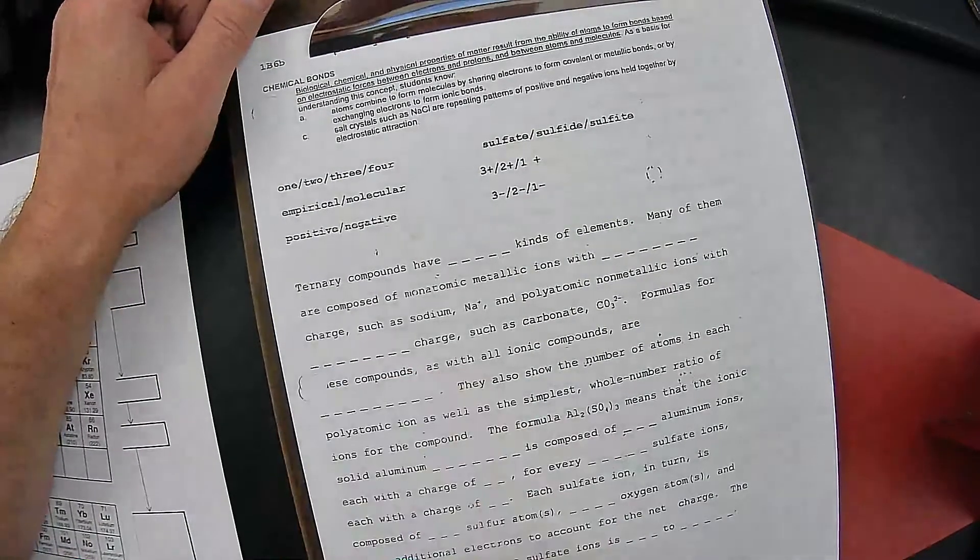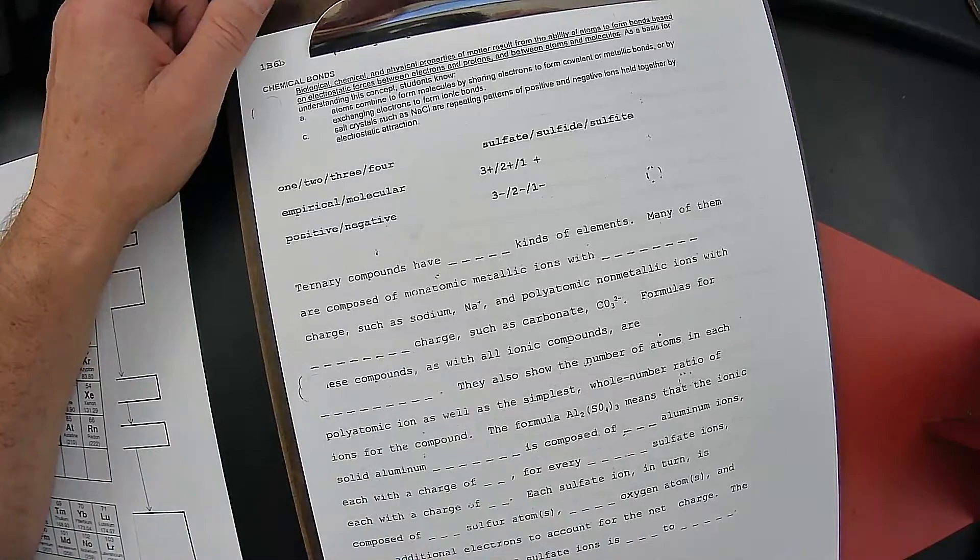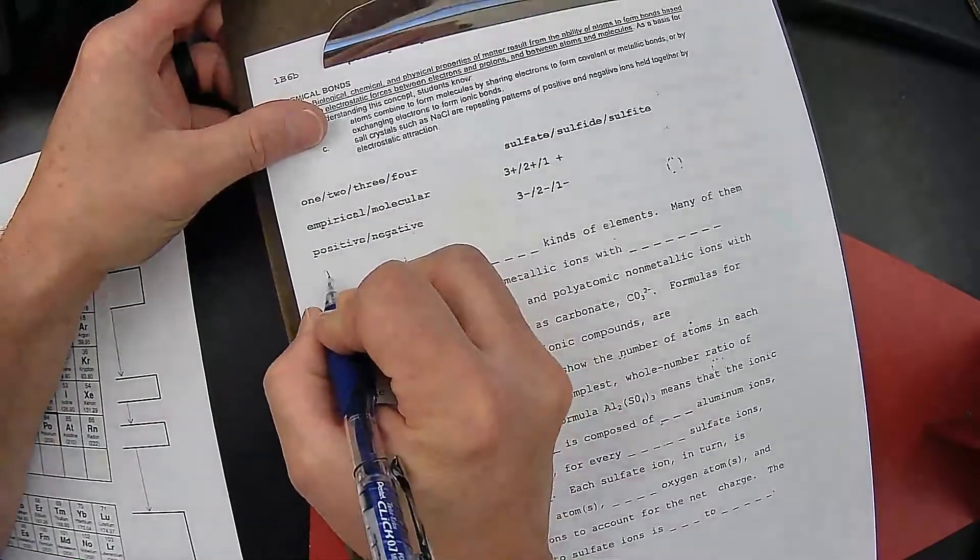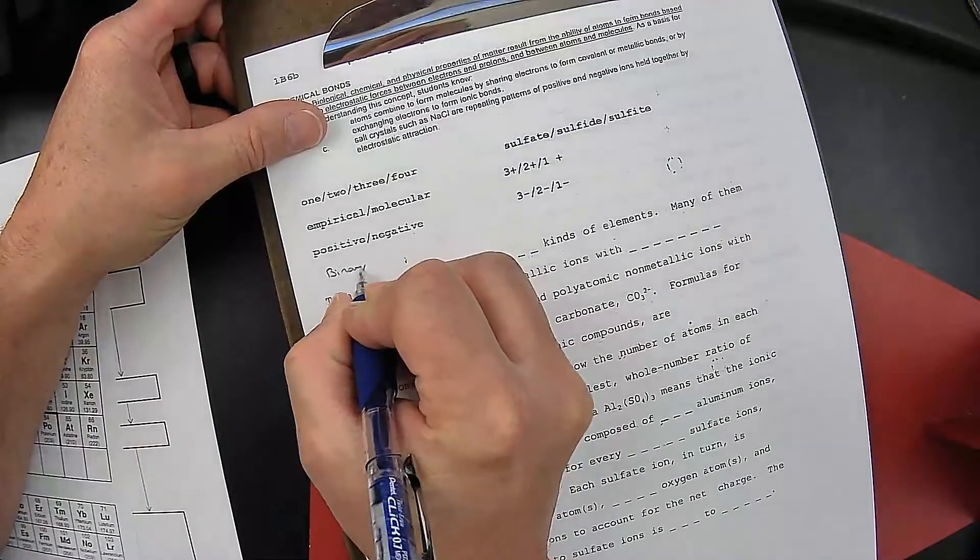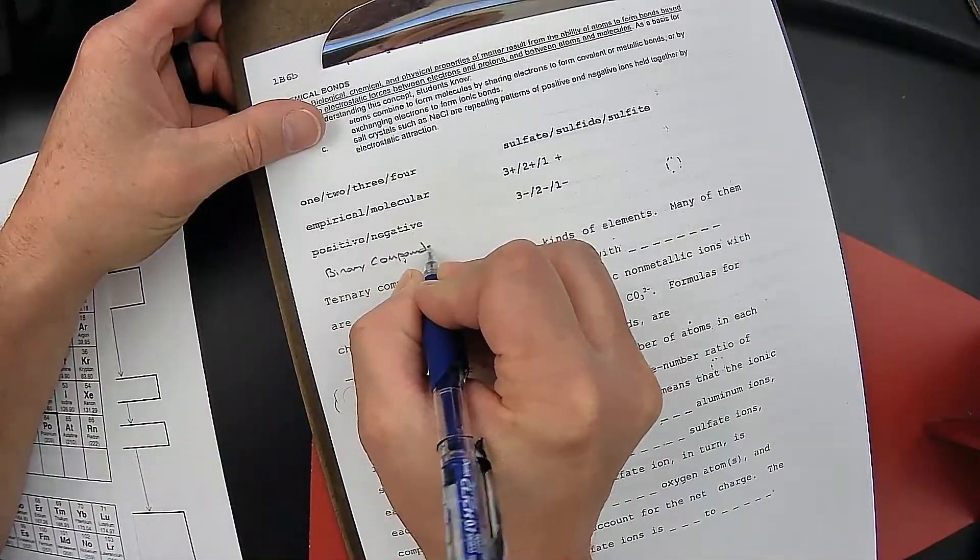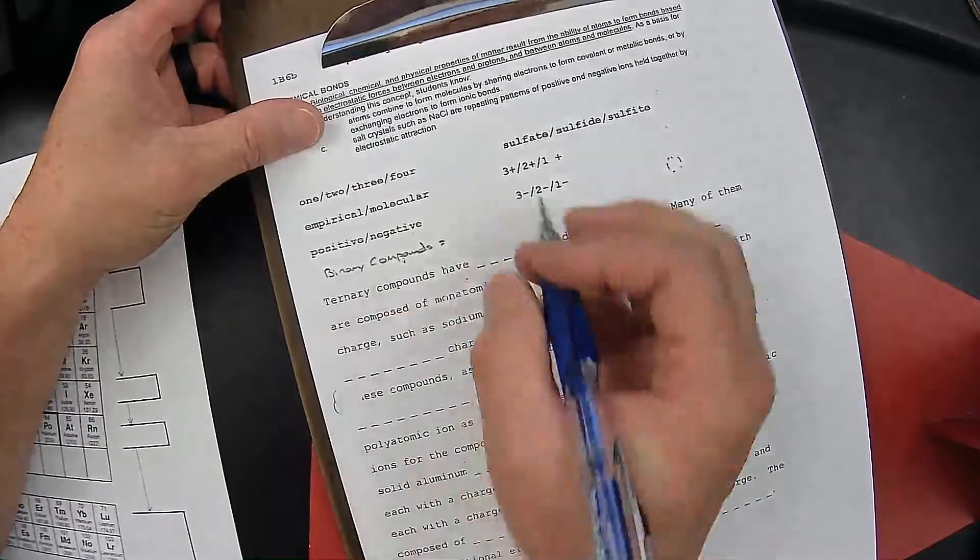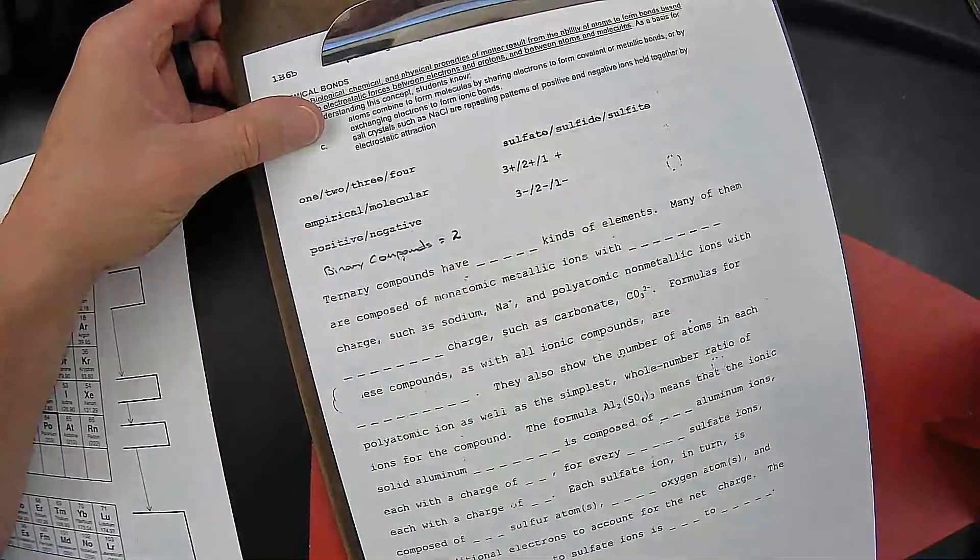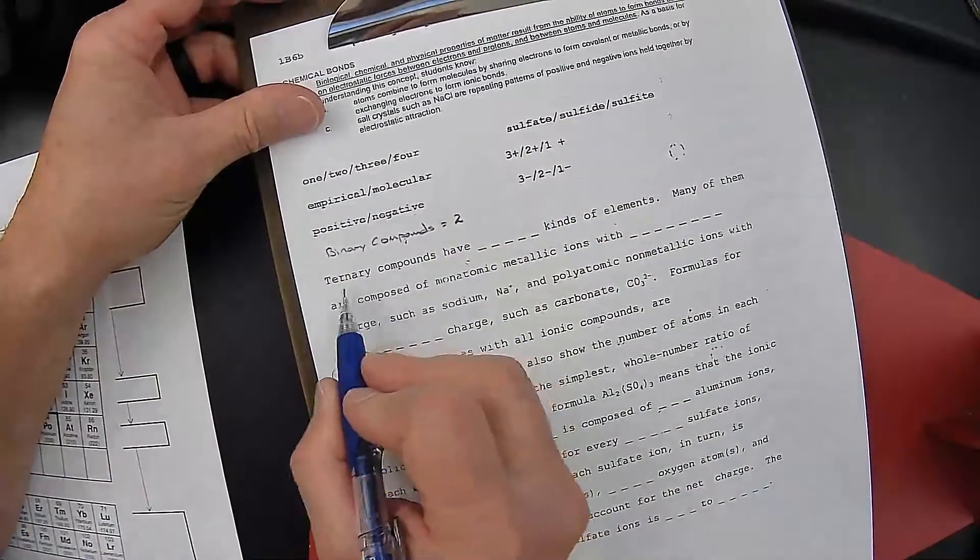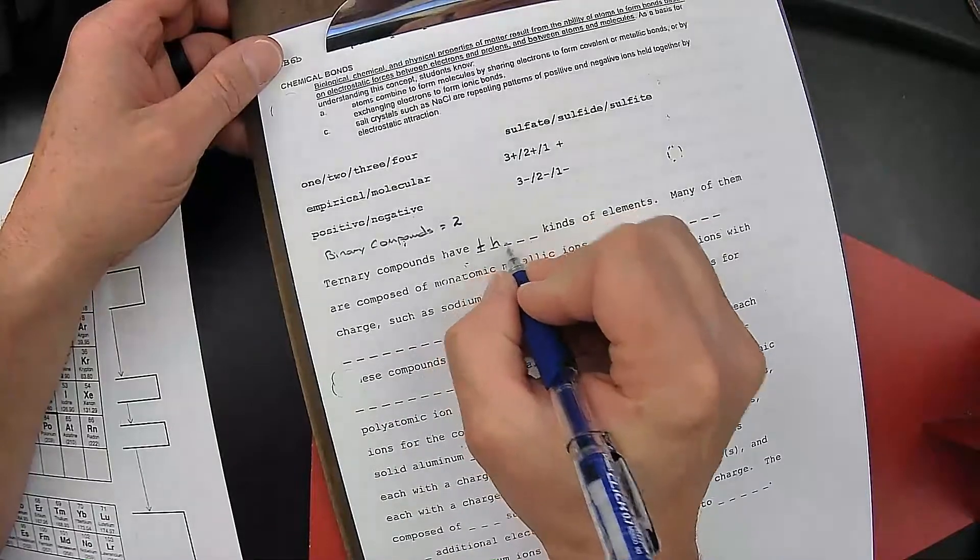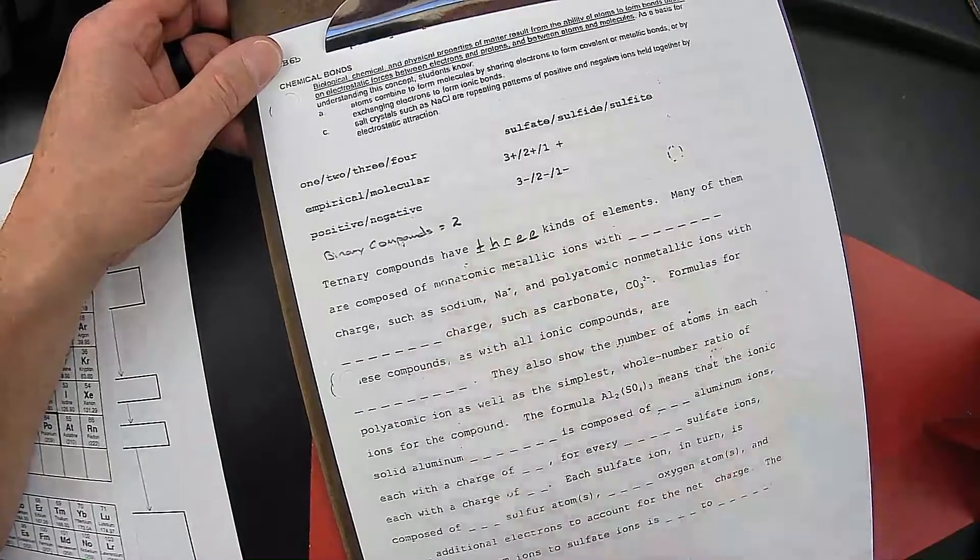Ternary compounds, as opposed to binary compounds - we previously worked through a worksheet in which we had binary compounds. Binary compounds, just like the prefix bi-cycle has two wheels, have two elements. Now we're going to be working through ternary compounds, and ternary compounds have three kinds of elements.